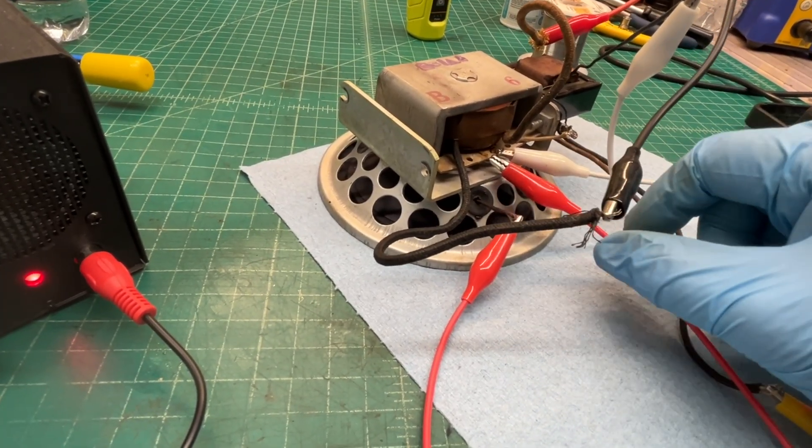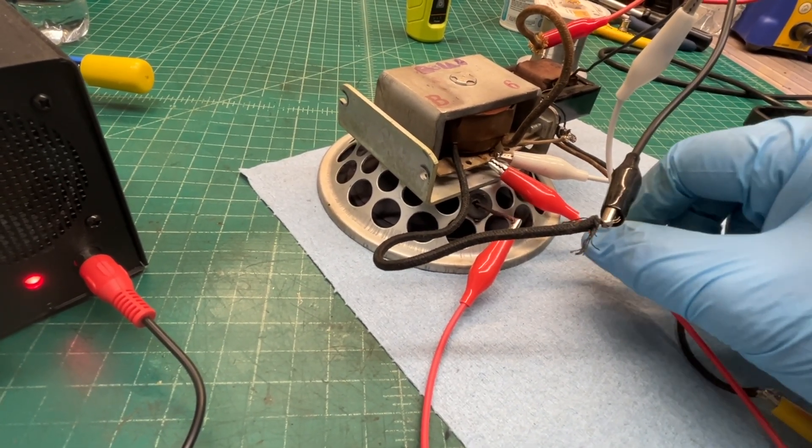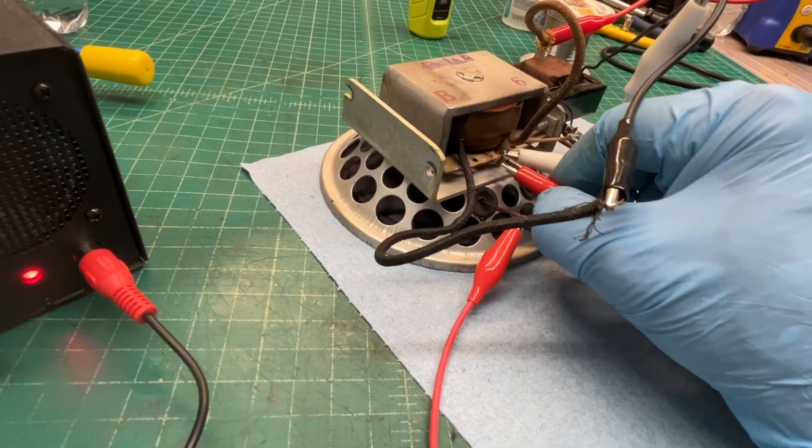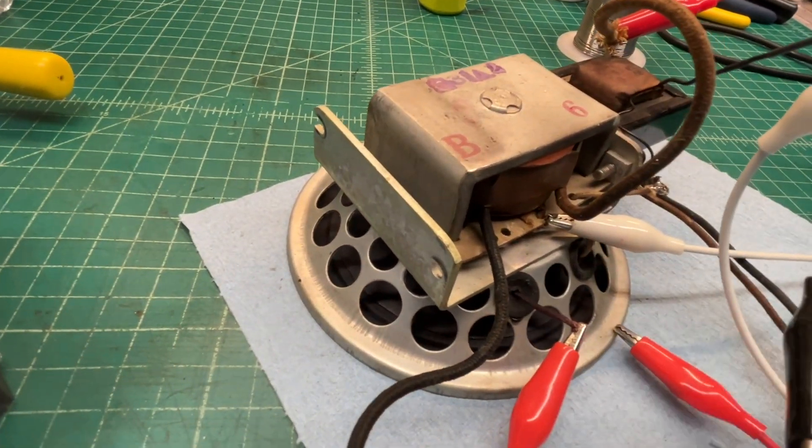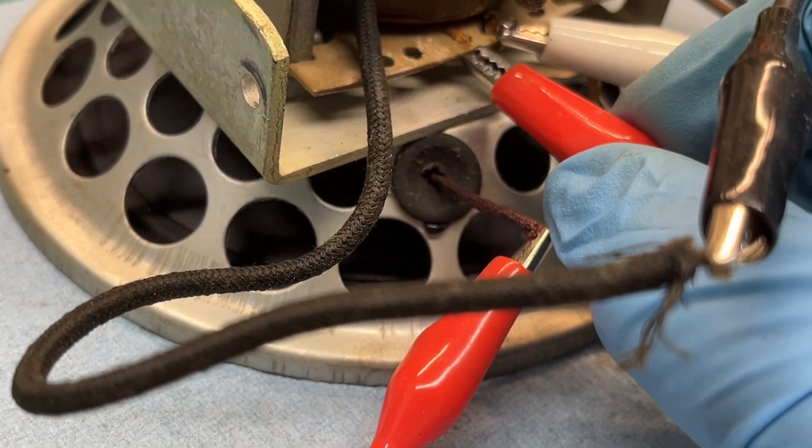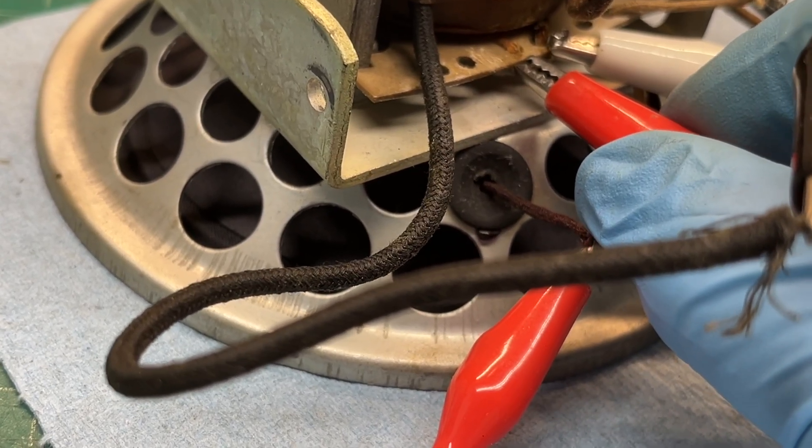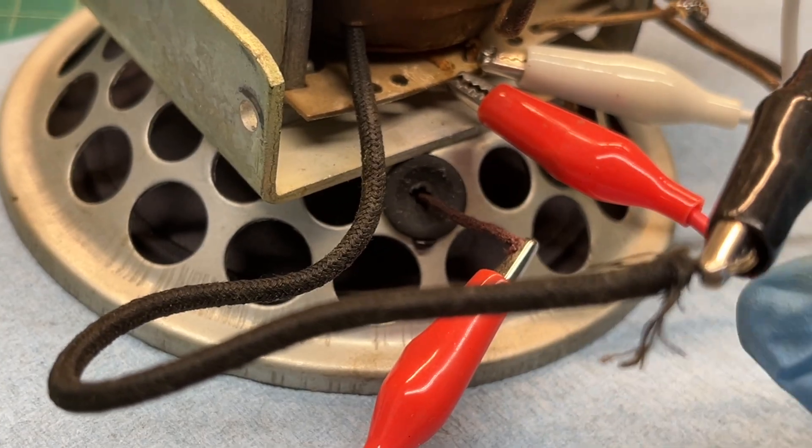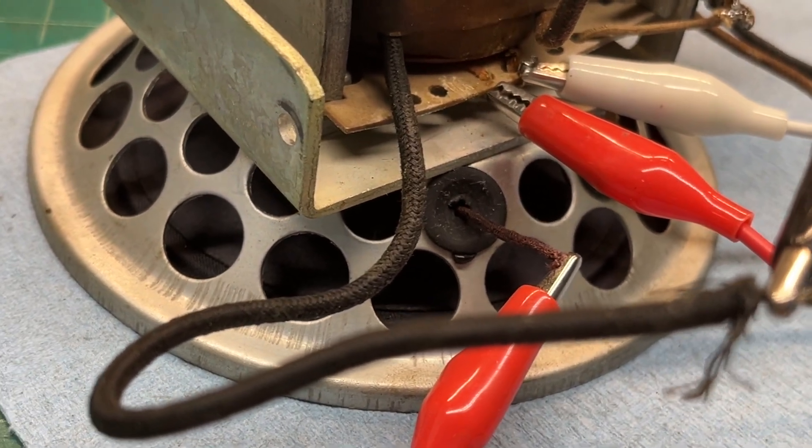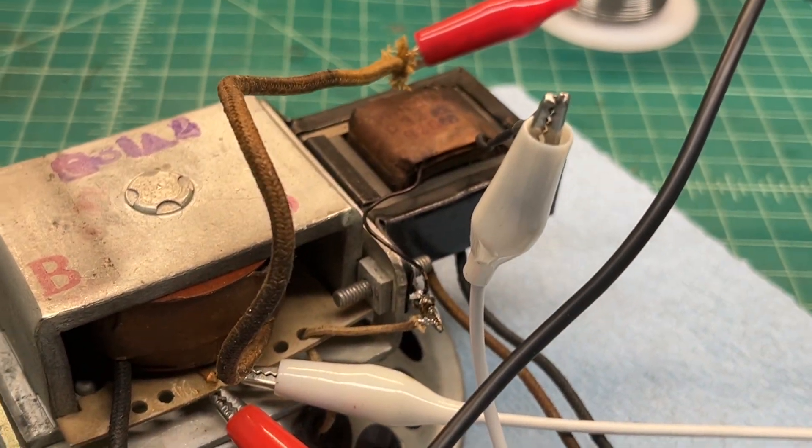So the red lead of the voice coil itself, you can see, will attach to the humbucking coil at this location. So that will be my solder down location. And then the white lead will be the other side of the output transformer.